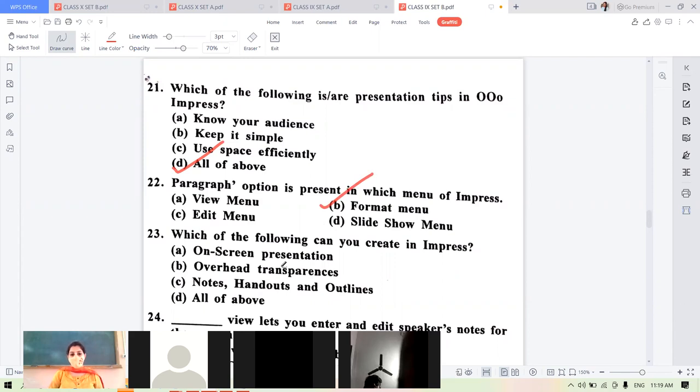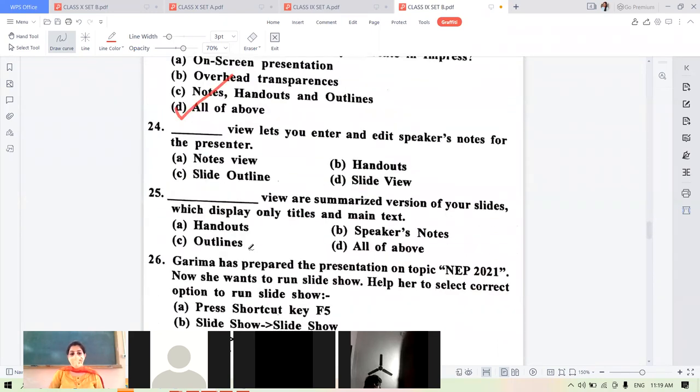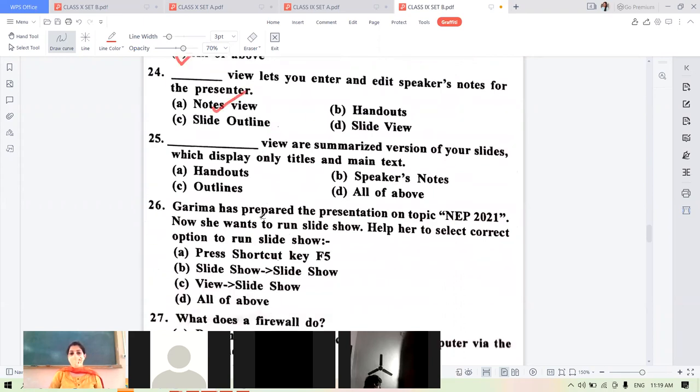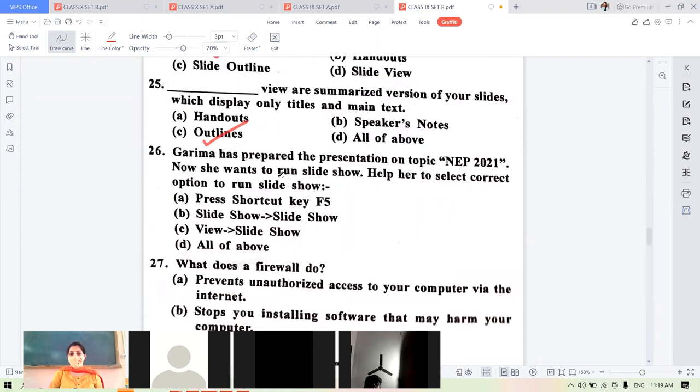Identify the views of Impress. This is normal view in which workspace is there, slide pane is there, and this is task pane. Which are presentation tips? Know your audience, keep it simple, use space efficiently, all of the above. Paragraph is in format menu. What you can create in Impress? On-screen presentations, overhead transparencies, notes, handouts and outlines. We can create all these things. Notes view lets you enter and edit notes for the presenter. She wants to run the slideshow, so help her select the option. F5, slideshow menu slideshow, view slideshow. All options are correct.